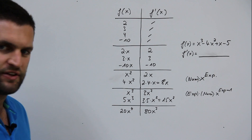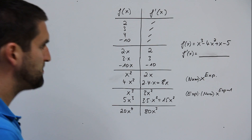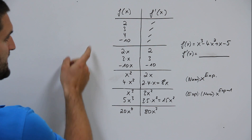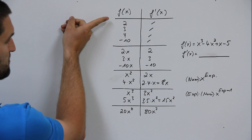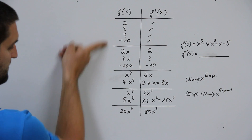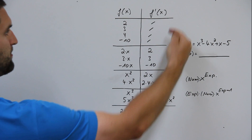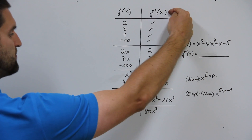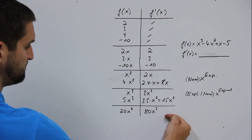To make the first derivative of a polynomial function, you need some basics. I have f on the left side and f', the first derivative, on the right side.